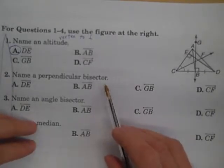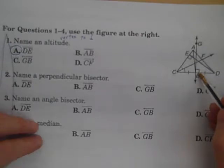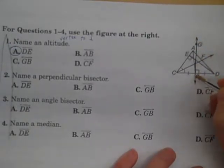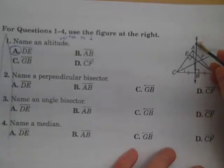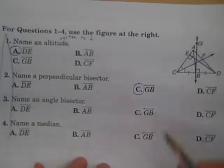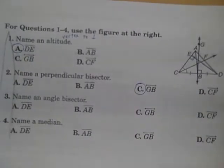Number two, perpendicular bisector. Now we do have another perpendicular here, that this side is perpendicular to line GB. So GB is our perpendicular bisector.